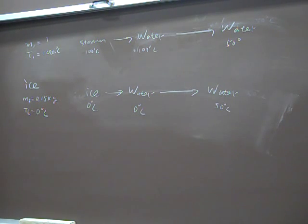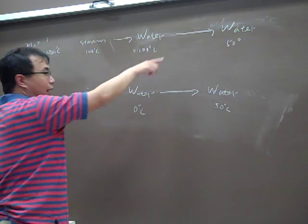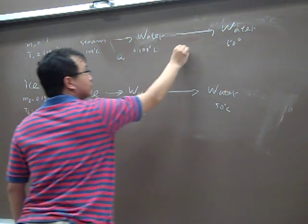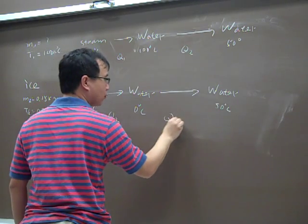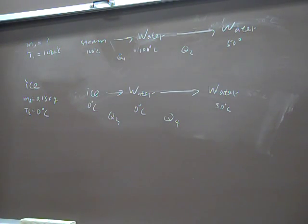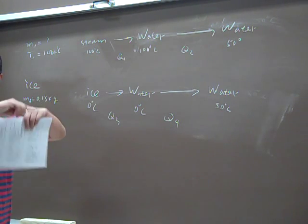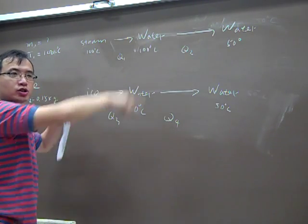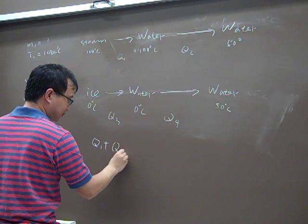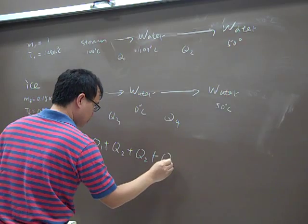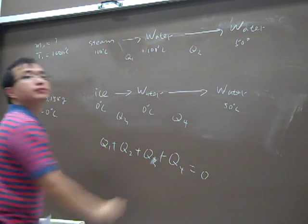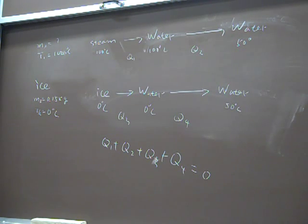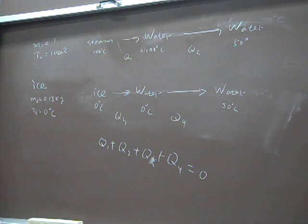So basically you can see here, you have Q1, Q2, Q3, Q4. Four heats involved with each other in this problem, right? And since this is a thermally insulated container, so the energy will not exchange to the outer environment. So this heat, if you add them together, it should give you 0. Okay? So that's the equation you can use to calculate the initial mass.